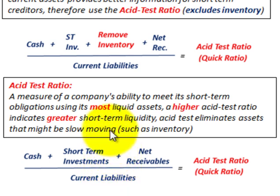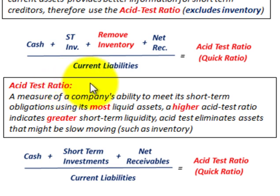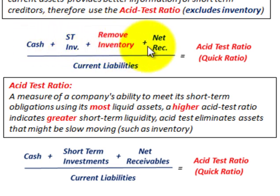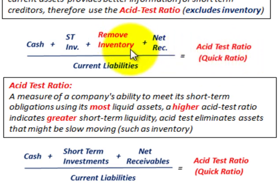So we've looked at both the current ratio and the acid test ratio — also called the quick ratio. The key difference is that we remove inventory from current assets when calculating the acid test ratio. That covers both of these liquidity ratios: the current ratio and the acid test or quick ratio.